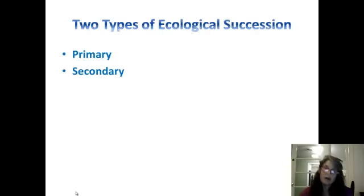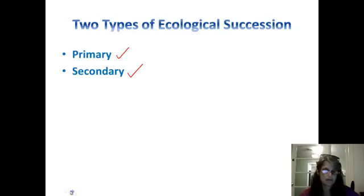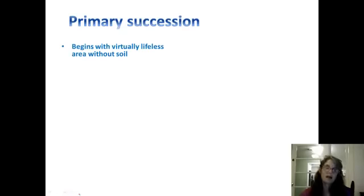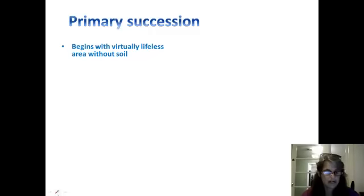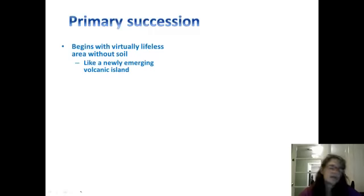There are two types of succession: primary succession and secondary succession, and we're going to talk about both. Primary succession is this process when you start with nothing — barren rock, just rock, no soil, no nothing. So you're beginning with a lifeless area that does not even have soil.